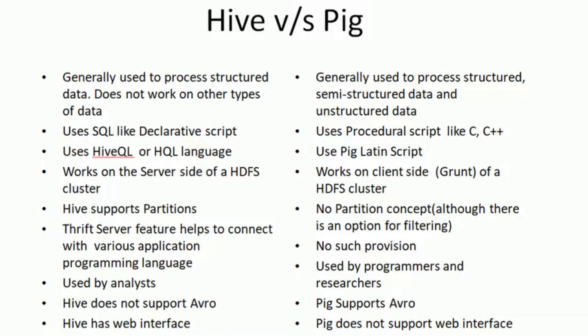Coming to Hive, it is generally used to process structured data only — it doesn't work with other types of data. Whereas Pig is generally used to process structured data, semi-structured data, and unstructured data as well.